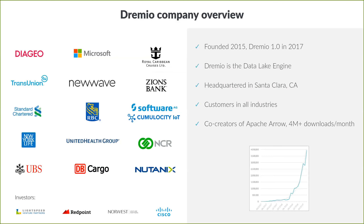I'm going to spend a couple of minutes talking about Dremio — the company and our product, the data lake engine. Dremio has been around for a few years and we are the data lake engine, based in California. Customers in all industries use our data lake engine — from Microsoft to TransUnion, UBS, NCR, and Software AG — to radically simplify their data architecture. We're also the co-creators of Apache Arrow, the new standard for columnar in-memory analytics, seeing about four to five million plus downloads a month on the Arrow project.